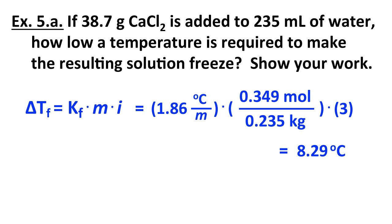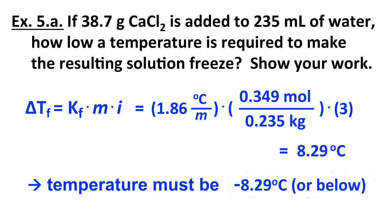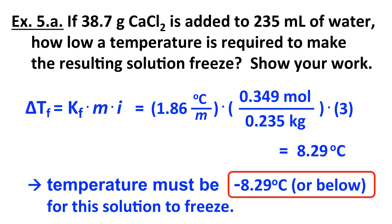Note that 8.29°C is not the final answer — it represents how much the freezing point goes down. Since water freezes at 0°C, the solution freezes at 8.29 degrees lower, or negative 8.29 degrees Celsius. Until at least −8.29°C is reached, the solution won't freeze. At −8.29°C and below, the solution would start forming a solid.